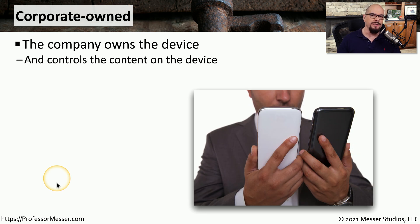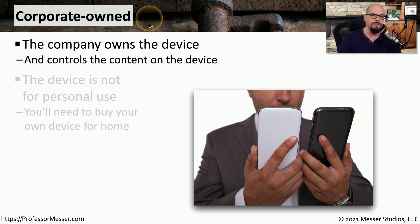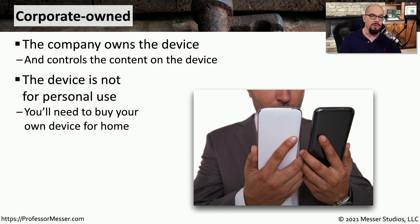In those previous deployments, we used a single device that could be used for personal use or corporate use. But there are times when you don't want a single device used for both situations. One of these deployments is a corporate-owned deployment, where the organization owns the device and you can't use it for personal use. If you need a smartphone for personal use, you'll need to purchase one yourself and carry around both your personal smartphone and your corporate-owned smartphone.